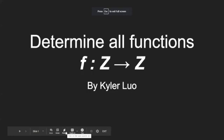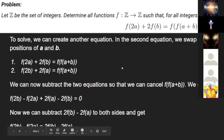Okay, determine all functions f: Z → Z. So the problem is: let Z be the set of integers.